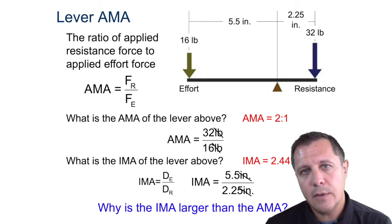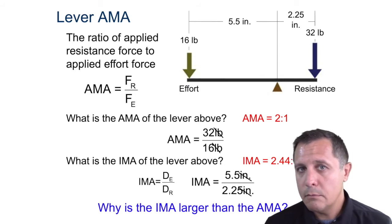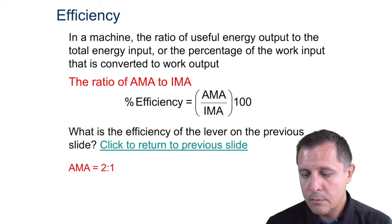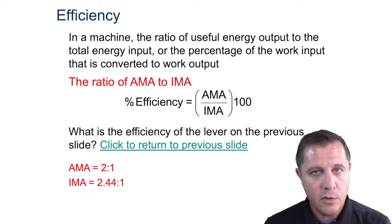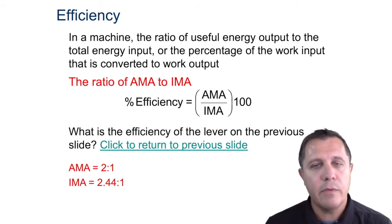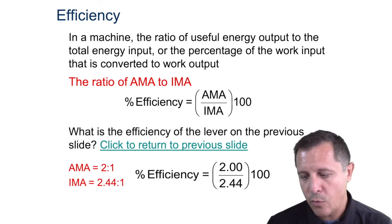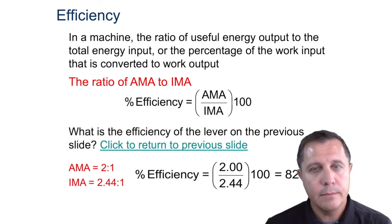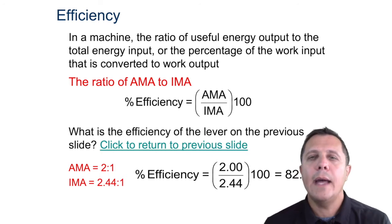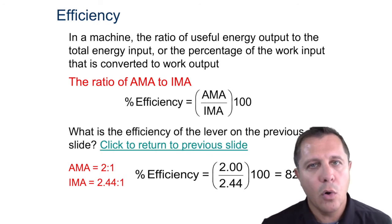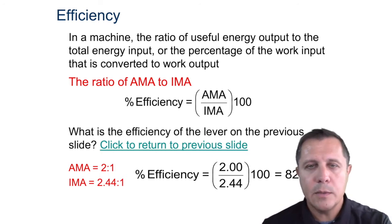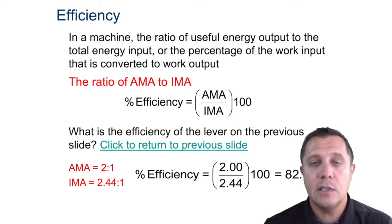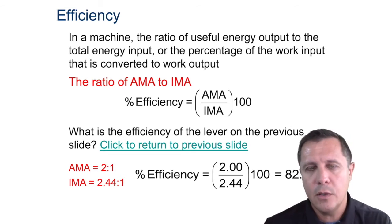Try to calculate the efficiency of the previous example. We have an AMA of 2 and an IMA of 2.44. That means 2 divided by 2.44, and we get an efficiency of 82%. That's how efficiency works with this. We're going to always be looking at efficiency and will be doing it with a lever lab here pretty soon.